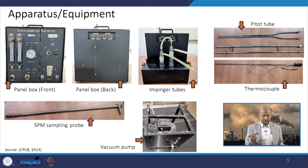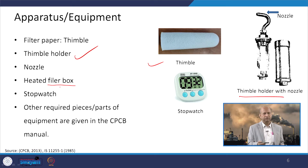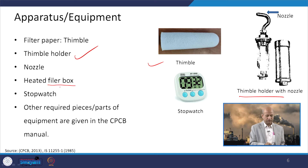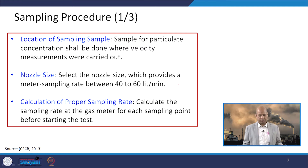A vacuum pump is there for extraction. The sampling probe is inserted into the stack. Other parts include the filter paper or thimble, the thimble holder, and the nozzle. There is also a heated filter box, a stopwatch, and other components of this equipment which are detailed in the CPCB manual — you can refer to that to learn more.